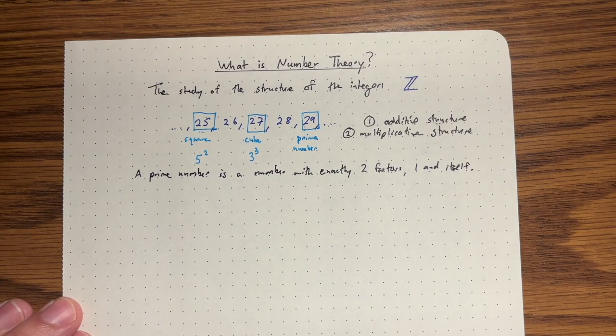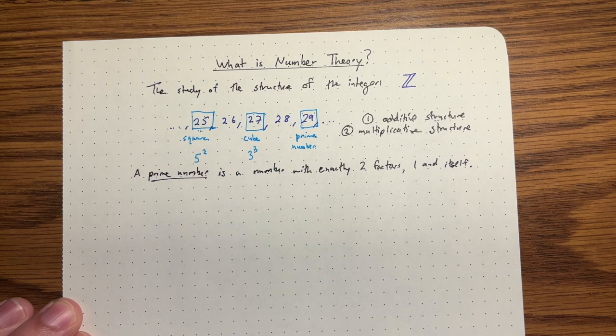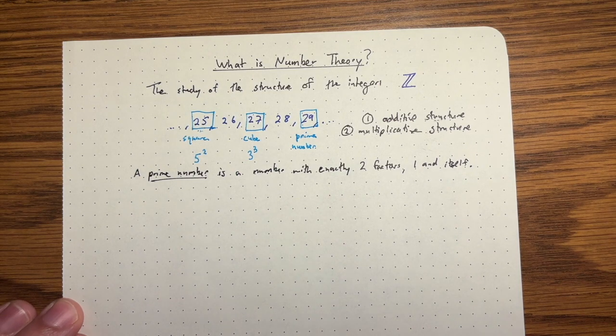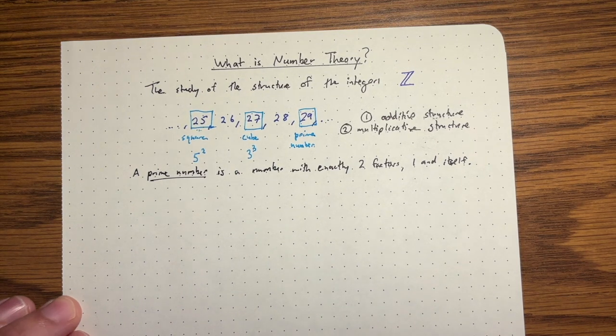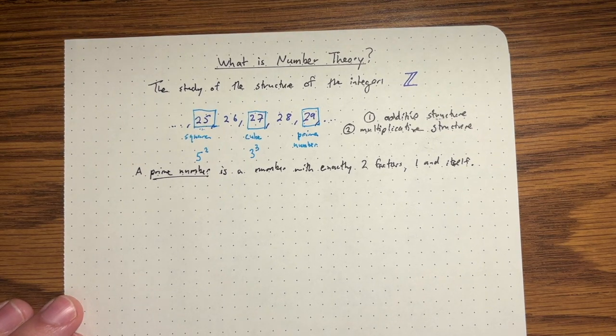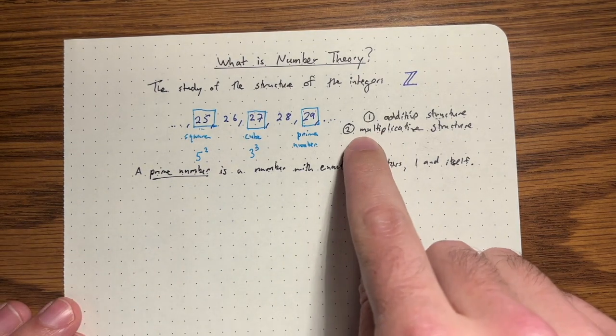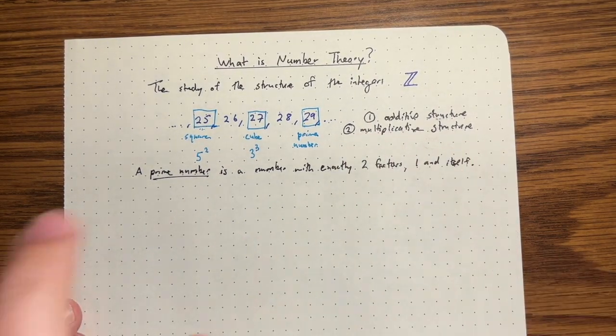In some sense, prime numbers are perhaps the main object of study in number theory, one of the main objects of study. Why is that, though?